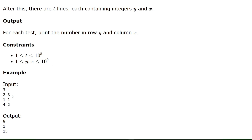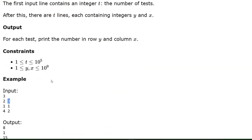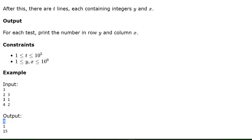Looking at the example input: for row 2 and column 3, the value is 8. The indexing is 1-based — the top-left corner, which holds number 1, has y=1 and x=1. So rows and columns begin from index 1.